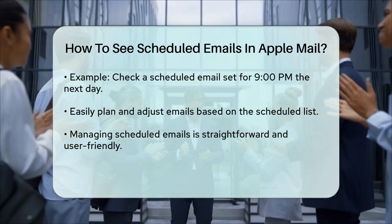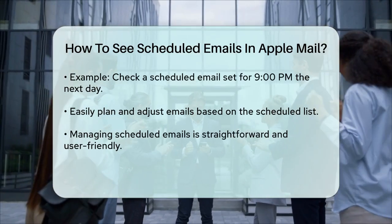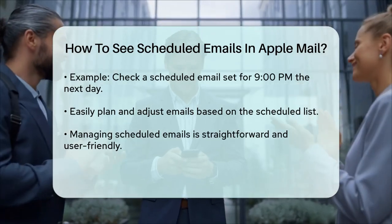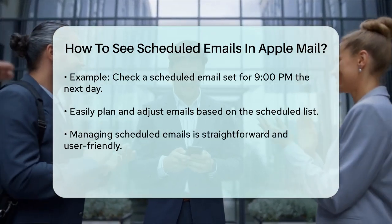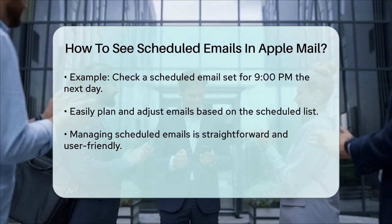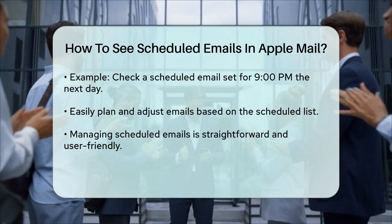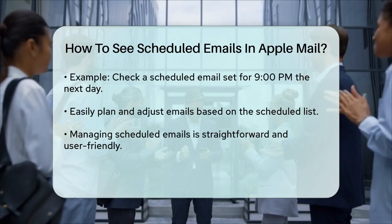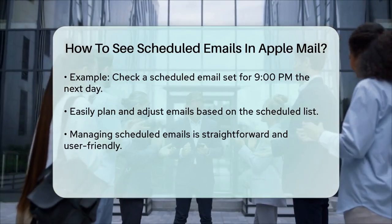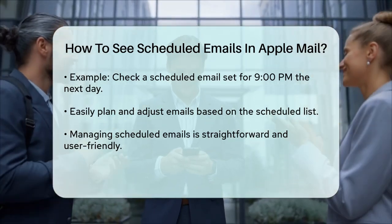So, to summarize, to see your scheduled emails in Apple Mail, simply navigate to the Send Later section in the sidebar on your Mac, or the Send Later box in the Mailboxes screen on your iPhone or iPad. From there, you can view, edit, or cancel your scheduled emails with ease.